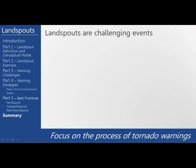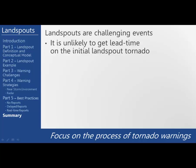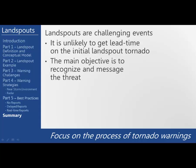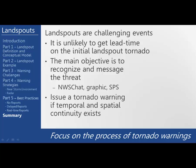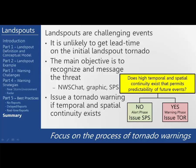In summary, landspouts are challenging events. It is unlikely to get lead time on the initial landspout tornado because the rotation is small in scale and they usually only last a few minutes. The main objective is to recognize and message the threat ahead of time. Look at the near-storm environment and use one or more of the messaging options to give our customers a heads up. If a landspout does occur, you can also use one or more of the messaging options to acknowledge the event and share additional information. Of course, issue a tornado warning if high temporal and spatial continuity exist that permit predictability of future events, and use this flowchart as a decision aid.